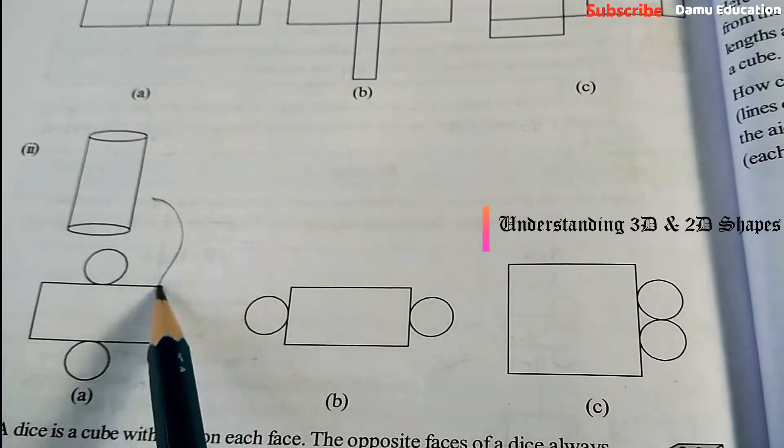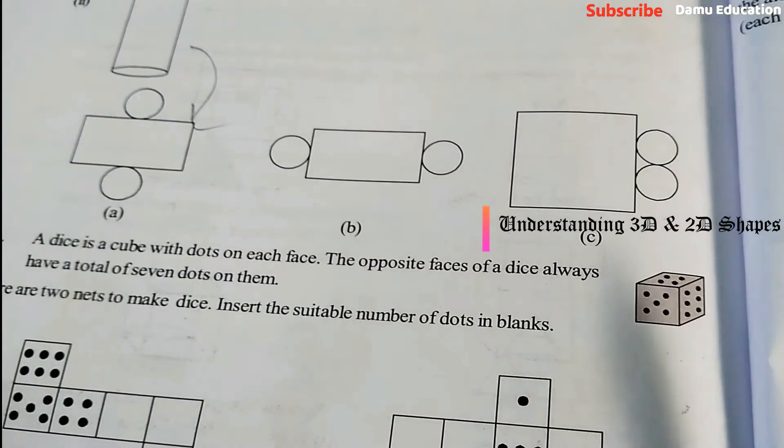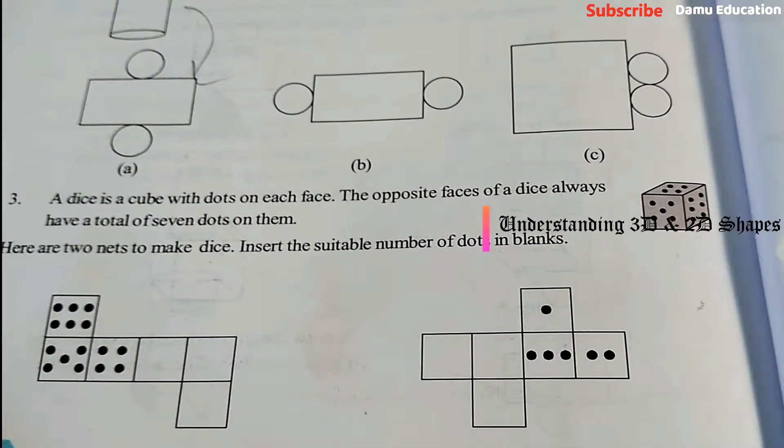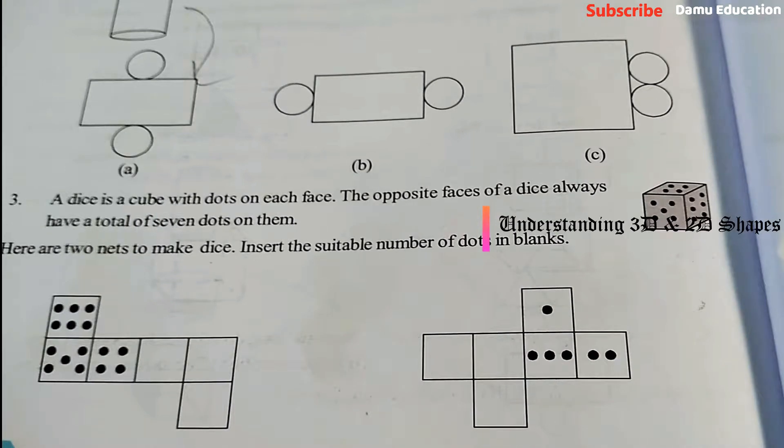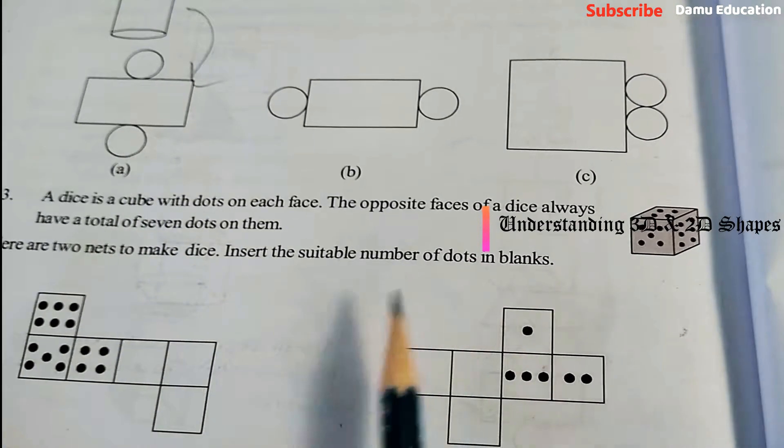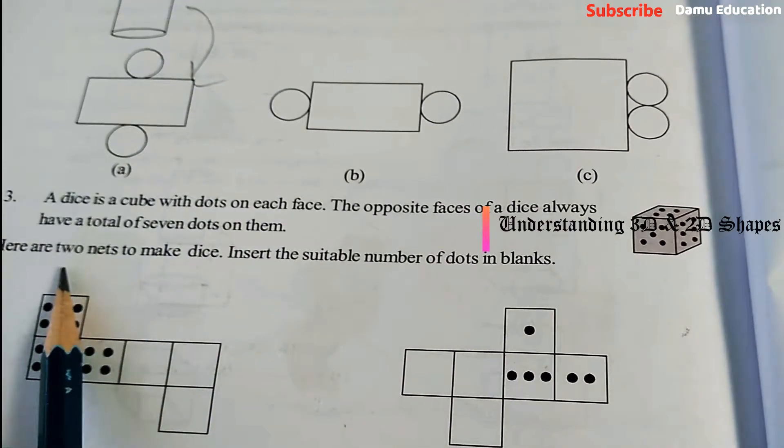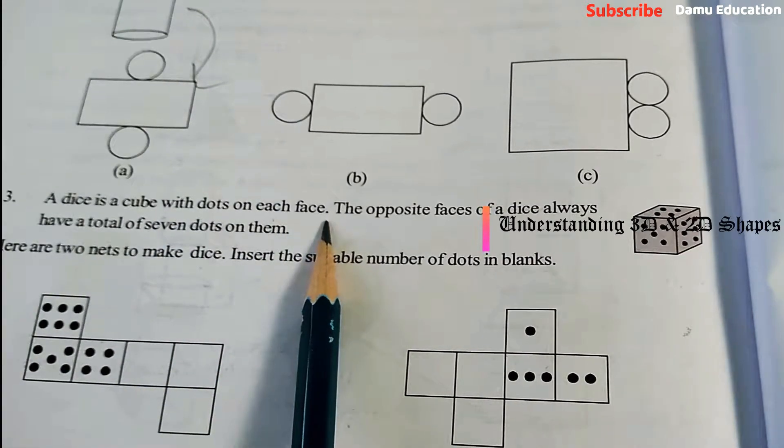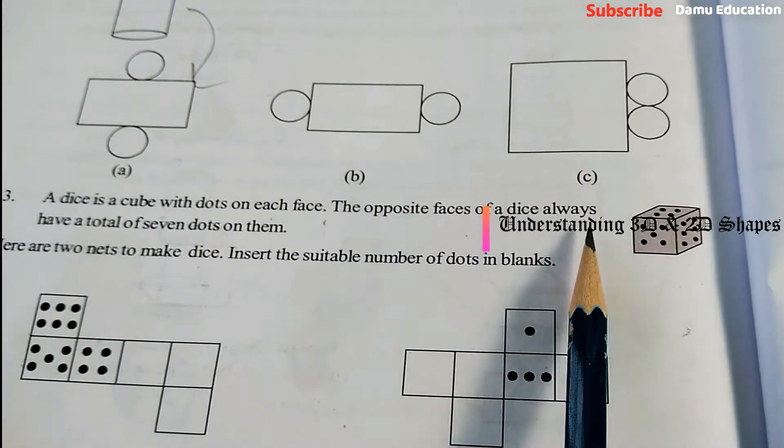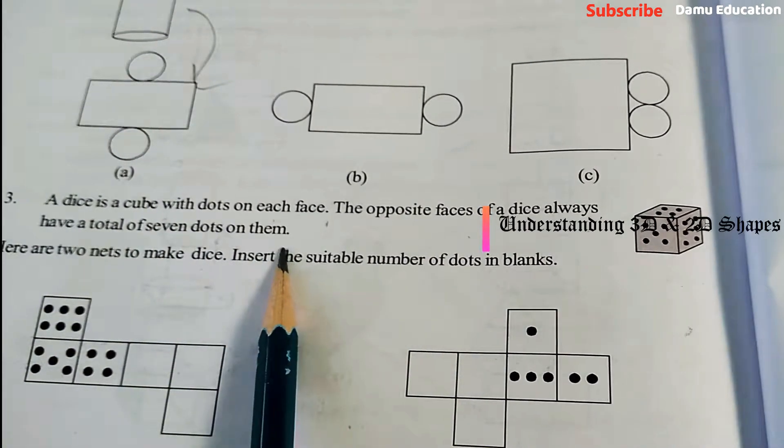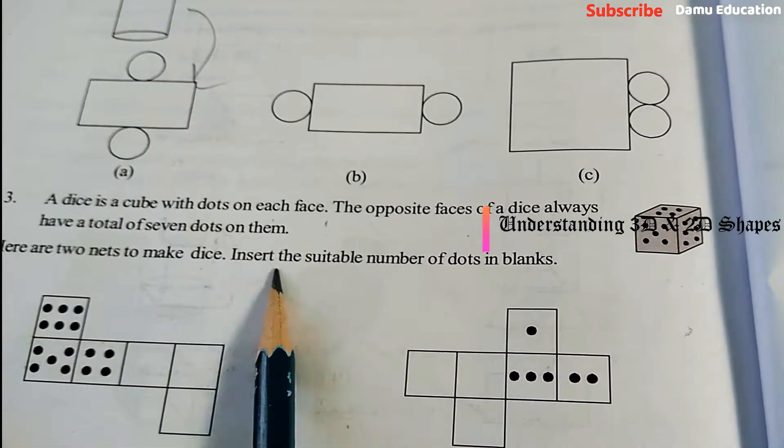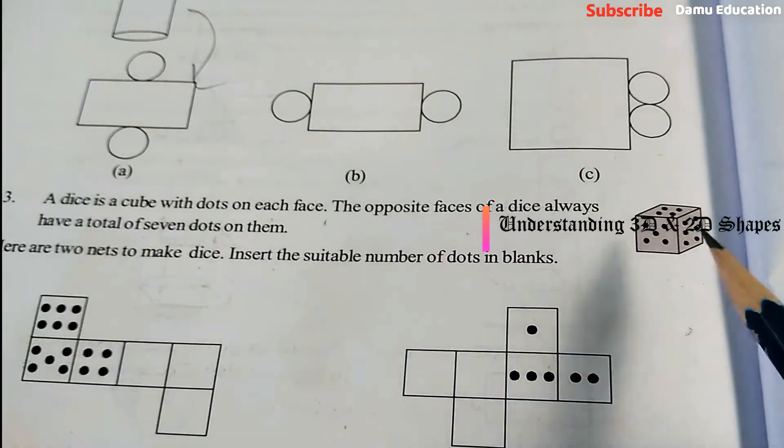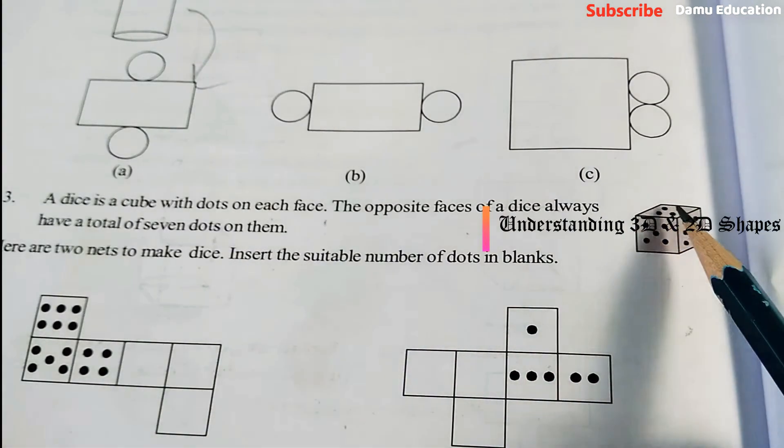Next, our third question. A dice is a cube with dots on each face. The opposite faces of a dice always have a total of seven dots on them. Here are two nets to make dice. Insert the suitable number of dots in the blanks.